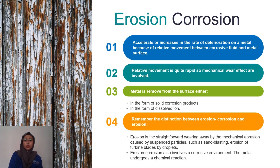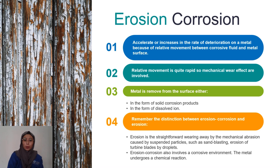Third, metal is removed from the surface either in the form of solid corrosion products or in the form of dissolved iron. Fourth, remember the distinction between erosion corrosion and erosion. Erosion is the straightforward wearing away by mechanical abrasion caused by suspended particles, such as sandblasting or erosion of turbine blades by droplets. Erosion corrosion also involves a corrosive environment — the metal undergoes a chemical reaction.